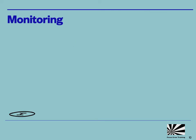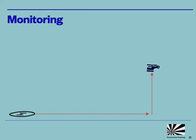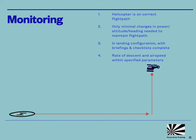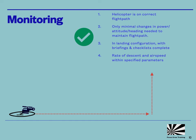The idea is that the operator will choose a point on the approach which they will define in their ops manual, depending on the environment, type of approach, and type of helicopter. This point is normally defined either as a distance from the landing point, or as a height above the landing surface or instrument approach minima. At this point, the crew needs to confirm that the helicopter is stabilised on the approach, so meeting the necessary criteria. If the approach is stabilised, the crew will continue the approach. If it's not stabilised, they must go around.